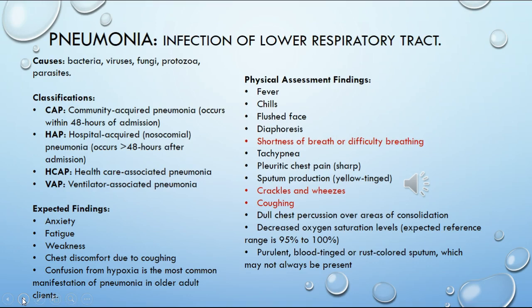The classifications include community-acquired, hospital/healthcare-associated, and ventilator-associated pneumonia. Findings typically include — especially in elderly patients — anxiety, fatigue, weakness, and discomfort from excessive coughing, as well as confusion from hypoxia. One example: a patient's husband's uncle's father was found slumped over and disoriented at home due to hypoxia from a severe case of pneumonia.